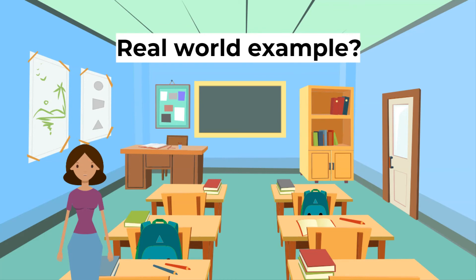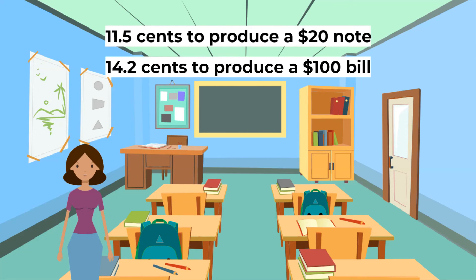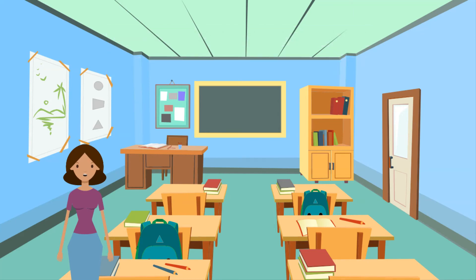What is a real-world example? Based on anticipated demand for new currency, the Federal Reserve places an order annually with the Department of the Treasury's Bureau of Engraving and Printing and pays for production costs. The Fed provides detailed information on each currency denomination and the cost to produce it. In 2019, for example, it cost 11.5 cents to produce a $20 note, and 14.2 cents to produce a $100 bill. The U.S. Mint is responsible for coin production, which is influenced by the number of requested Federal Reserve Bank orders. The Federal Reserve then purchases the coins at face value.